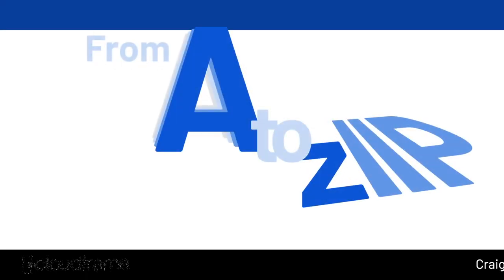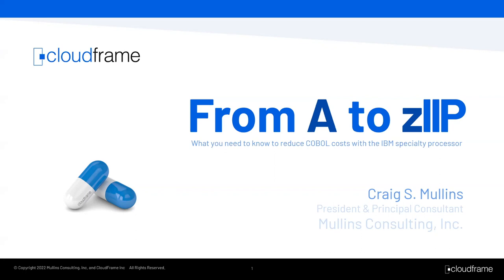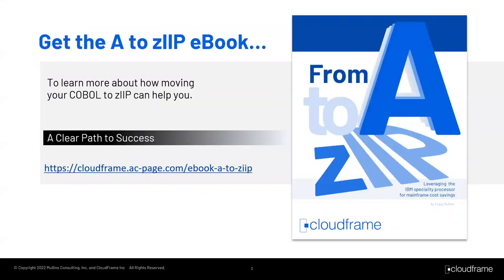Welcome to our webinar, 'From A to Zip: What You Need to Know About the IBM Specialty Processor.' My name is Craig Mullins, and I'll be your speaker today. Before we begin, I want to mention that CloudFrame has published an e-book I wrote on ZIPs under the same title as this webinar, 'From A to Zip.' It goes into more depth on some of the topics we'll discuss. Be sure to visit the link shown on the slide and request your copy.